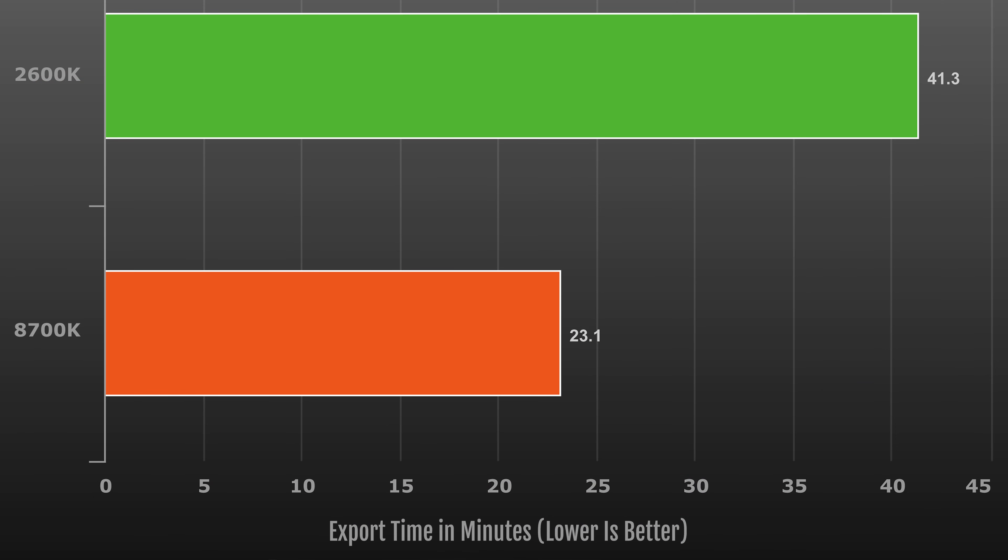Using these settings on the old rig, it took 41.3 minutes to complete, averaged over three exports. On the new rig, it took 23.1 minutes, again averaged over three runs. That was a pretty nice jump — nearly cutting my export time in half. I wanted to share this before-and-after information in case you were considering a similar upgrade, and even excluding the Intel hardware encoding as a factor, I'm still quite happy with this upgrade and definitely think it was worth it.